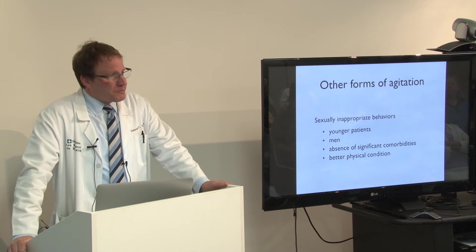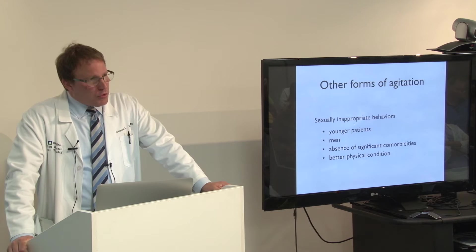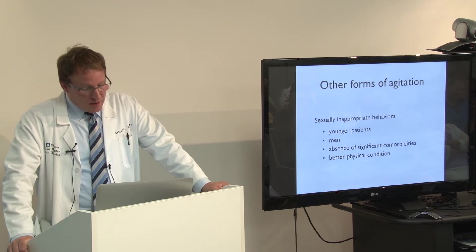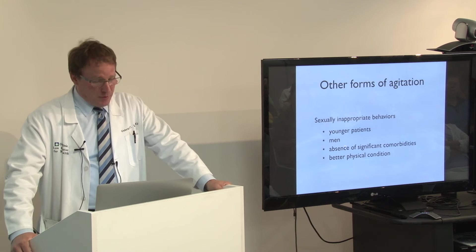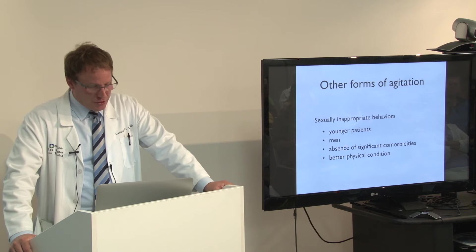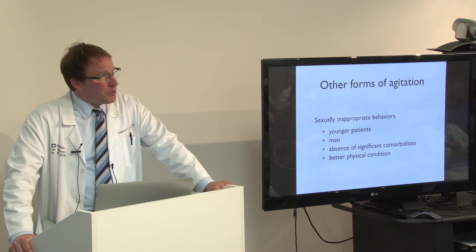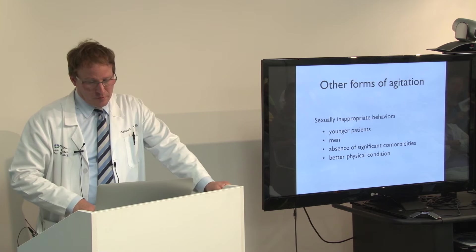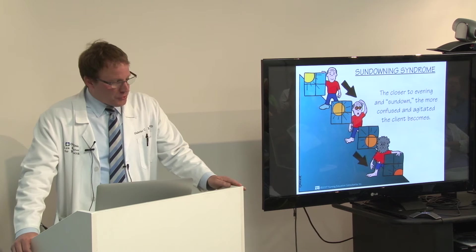Other forms of agitation: sexually inappropriate behavior. Again, something that's very difficult to deal with. This occurs in people who can do it — people who are young, in men, in people who don't have comorbidities, people who don't have other things that might prevent them from expressing sexual desires or behaviors, and people who are in better physical condition. We see it in all the dementias as well, but more often in young onset dementias because there are fewer comorbidities, less sickness.